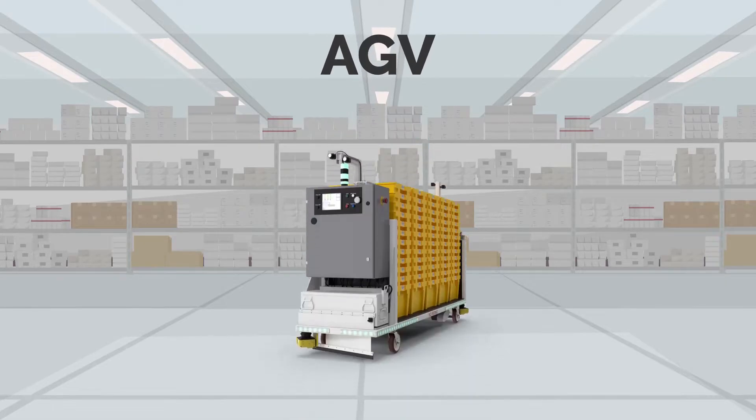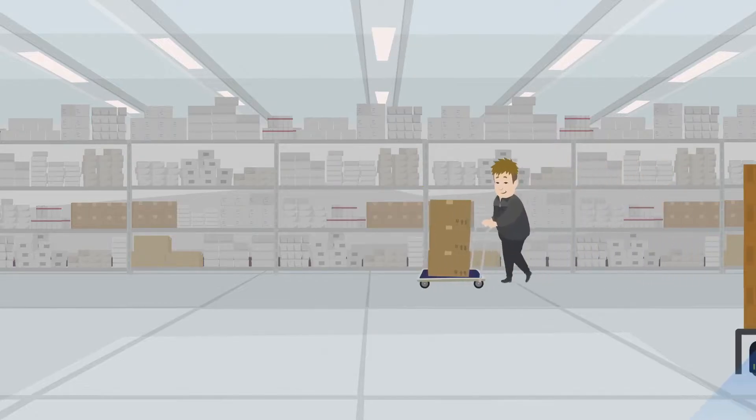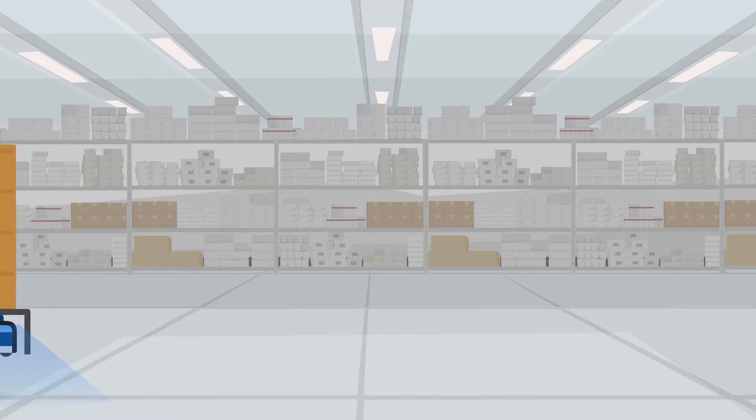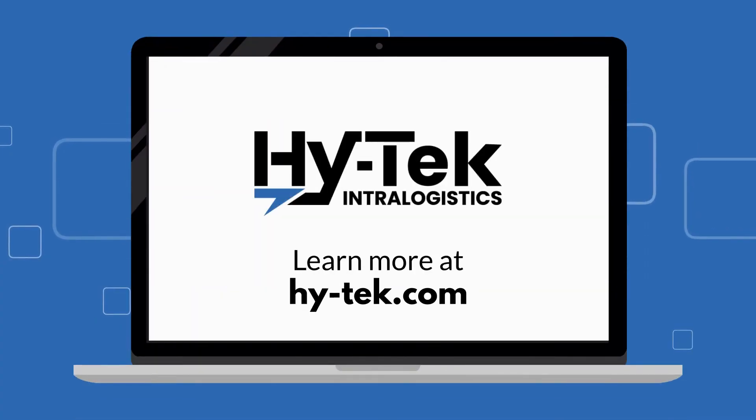Whether it's an AMR or an AGV, automated material handling systems are changing the way we move goods and creating a more efficient future. To learn more about automation and warehousing and distribution, visit HITECH.com.